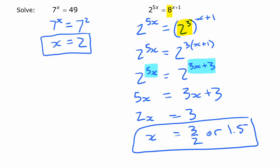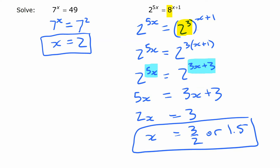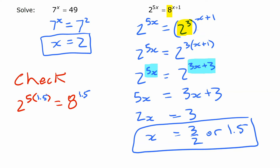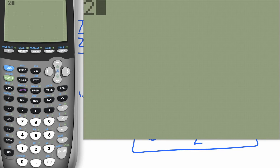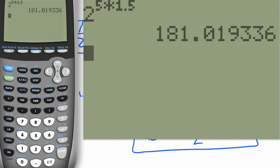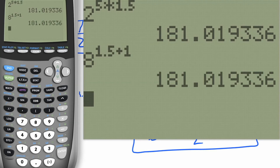Before we move on, it's important to remember that you can check your solutions. When solving any equation, you can substitute back in. So we take the original equation: 2 to the 5 times 1.5, and on the other side, 8 to the 1.5 plus 1. You work that out and should get the same value on both sides. Going to the calculator: 2 to the power of 5 times 1.5 gives us a value, and 8 to the power of 1.5 plus 1 gives us the same value. That confirms we've done this correctly.